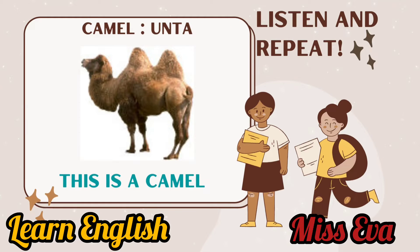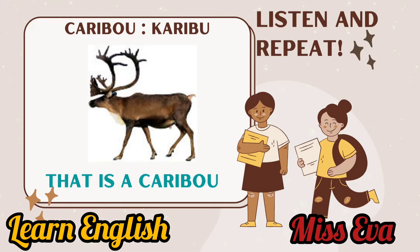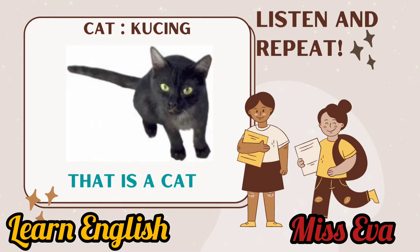Camel. This is a camel. Yes, this is a camel. Now repeat. Caribou. Listen — this is a caribou. Now you repeat. Cat. Listen — that is a cat. Now you repeat.